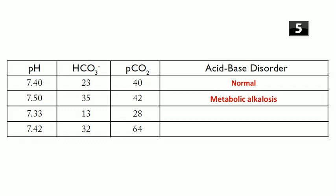Next ABG: pH 7.33 (low, acidosis), bicarb 13 (low — metabolic acidosis), PCO2 is also low (which would raise pH, but pH is still low). The low PCO2 did not normalize the pH, so this is a classic metabolic acidosis with some respiratory compensation.